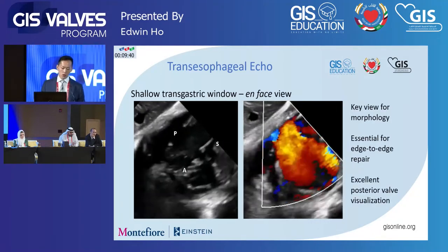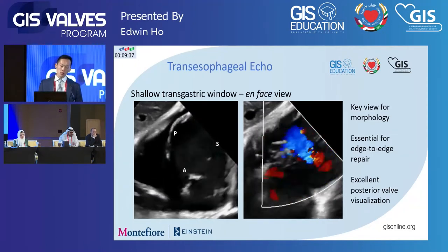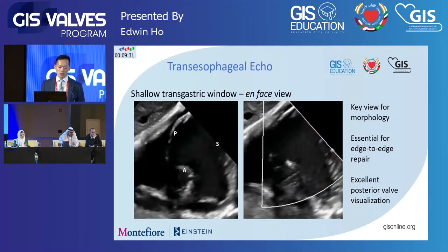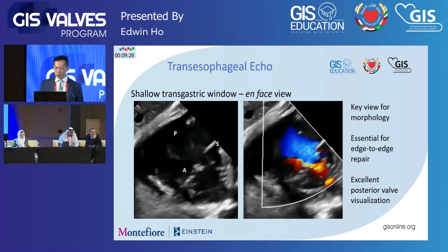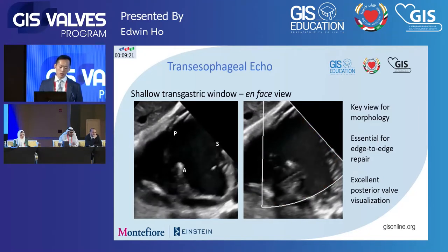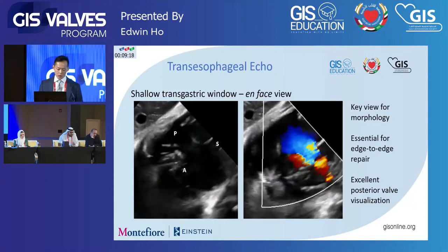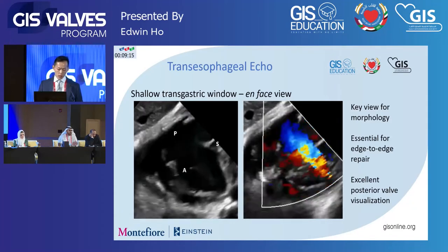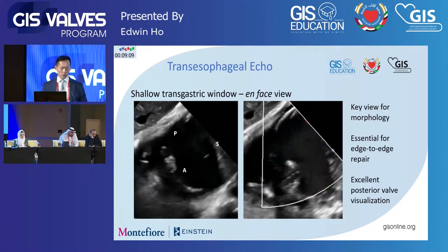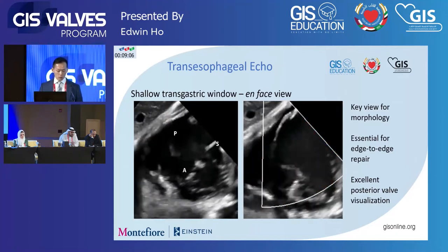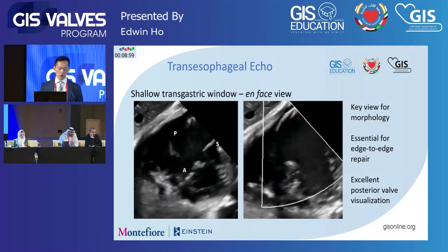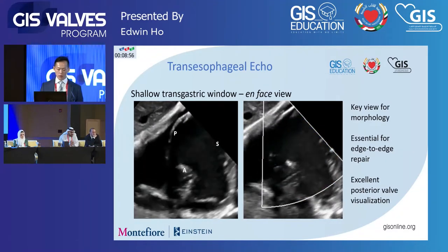The other key view is the shallow transgastric window, which gives us an en-face view — usually about 30 degrees of rightward rotation and a fair amount of antiflexion. This is a really key view for tricuspid valve anatomy because it shows us a lot about morphology, gaps, where the jet is actually coming from, and where the potential target would be for a leaflet repair such as an edge-to-edge intervention. It's also used as a working view for edge-to-edge repair. Because of the proximity to the transducer, the posterior part of the valve is very well visualized here — and that's particularly relevant for valve replacements, as this is sometimes the only view where you'll see the posterior aspect clearly.